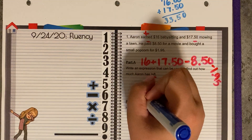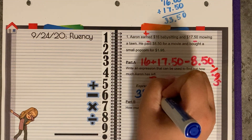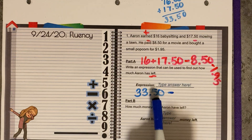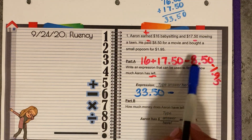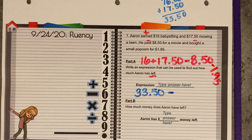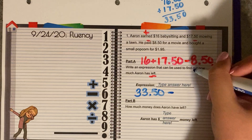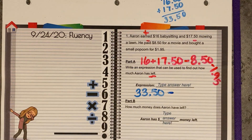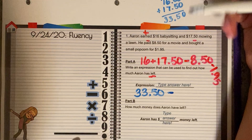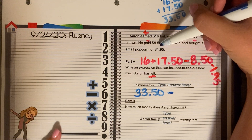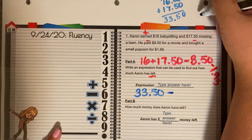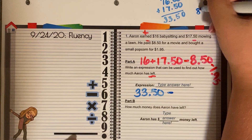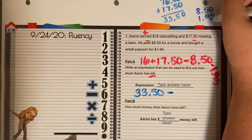So $33.50 is what he earns. This is another way that you can write it, and then we'll subtract what he had to pay. So you can put $33.50 minus $8.50, or if you add together $8.50 and $1.95, then we can subtract all of that together. For example, if he bought the $8.50 and $1.95 items together, that would cost a certain amount, and then we can subtract them from whatever he earned.